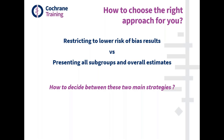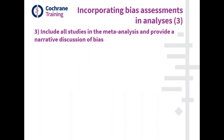Before moving to the third approach, I want to highlight that these first two approaches are the mainstay approaches for considering risk of bias, certainly in Cochrane reviews. If those were your main options, how would you decide which one to choose? I can't give a simple answer — it is a review team decision. The main factor should be based on the balance between the potential for bias and the loss of precision resulting from exclusion of higher risk of bias studies.